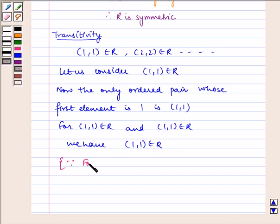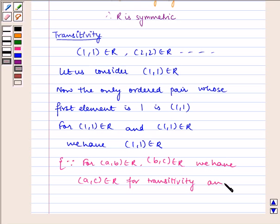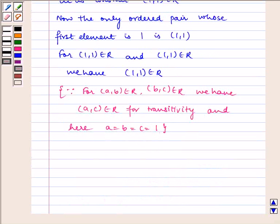Because, for (a,b) belongs to R and (b,c) belongs to R, we have (a,c) belongs to R for transitivity, and here a equals b equals c equals 1. Therefore, R is transitive.